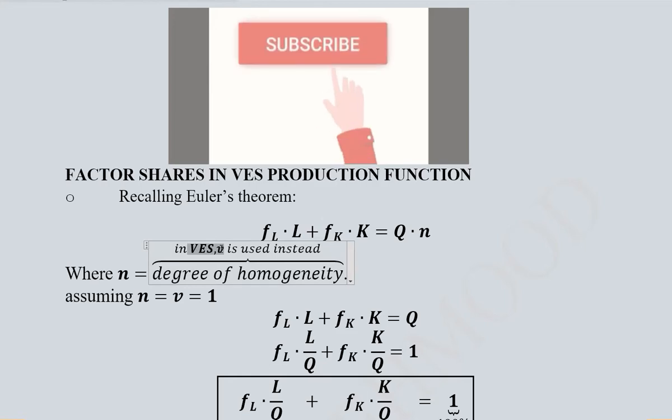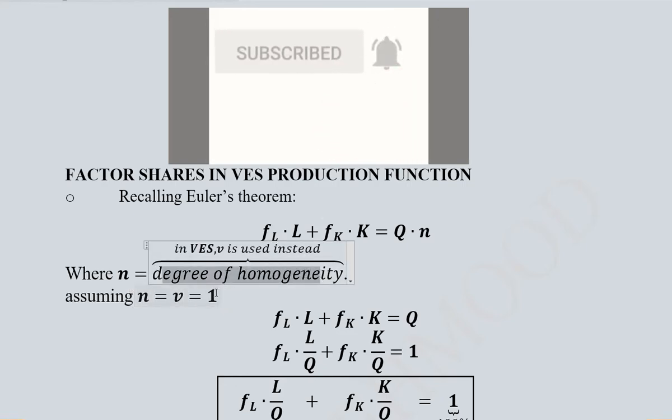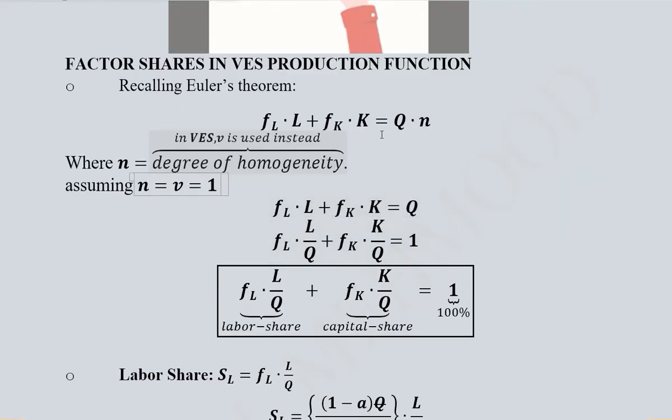In the case of VES, the degree of homogeneity is represented with V. Instead of V, we know that n can be used, or in general terms n is more suitable. The degree of homogeneity is considered to be equal to 1 for simplicity. Once we consider n equals 1, then the answer would be only Q.